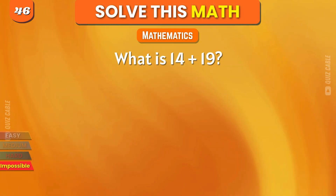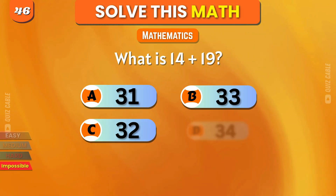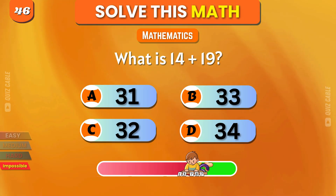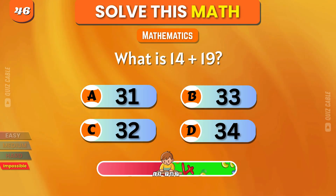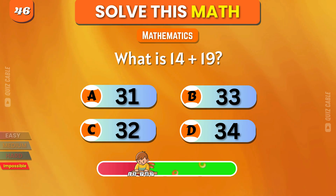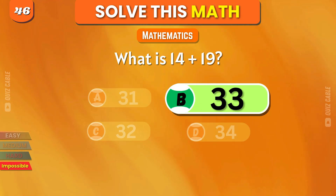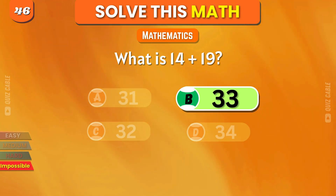What is 14 plus 19? 31, 33, 32, 34. Correct, 33.